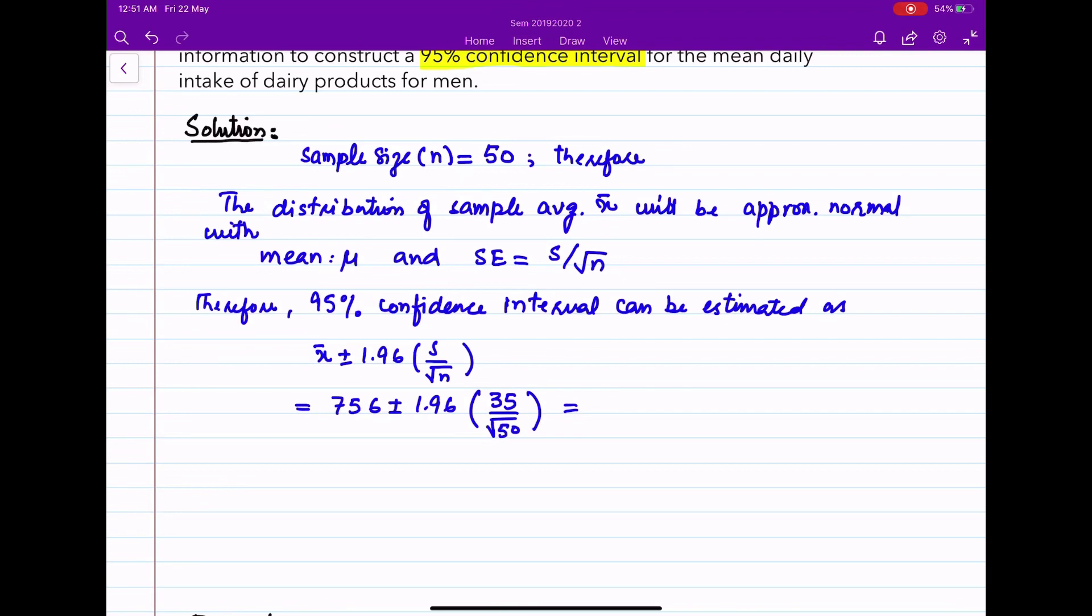756 plus minus 9.70. Therefore, our 95% confidence interval is 756 plus 9.70 and 756 minus 9.70, which makes